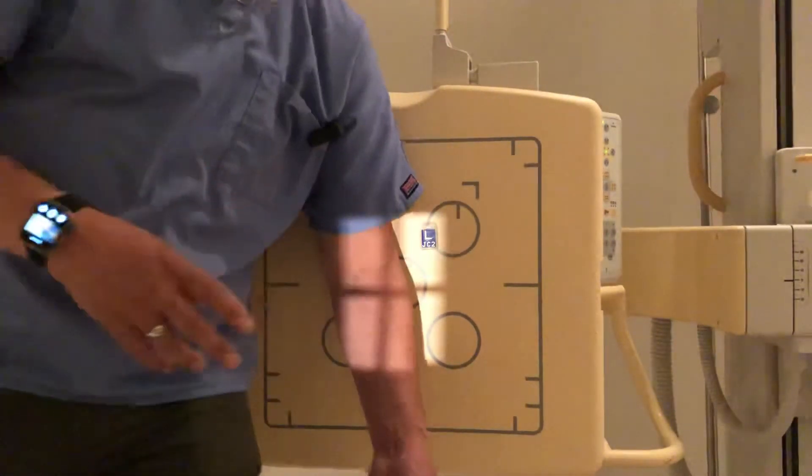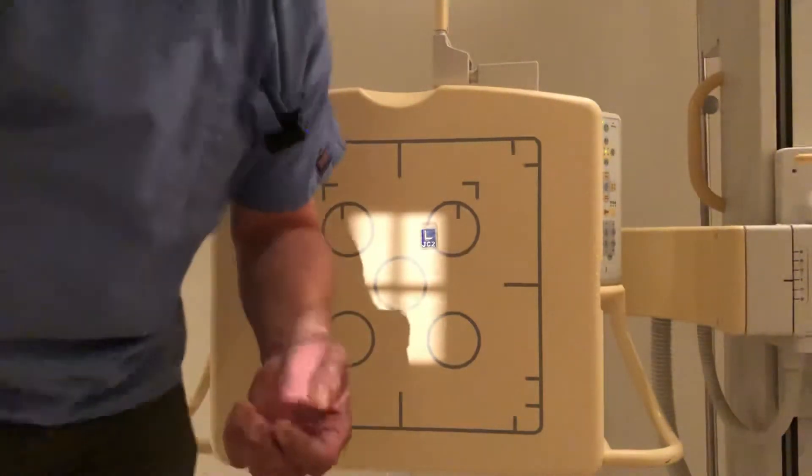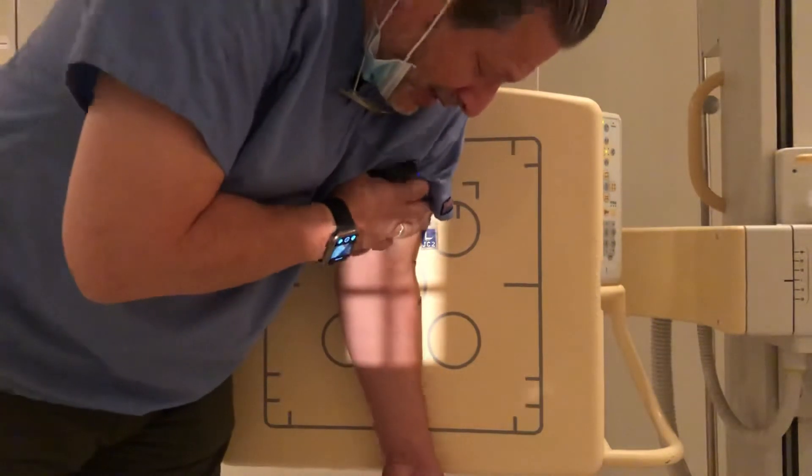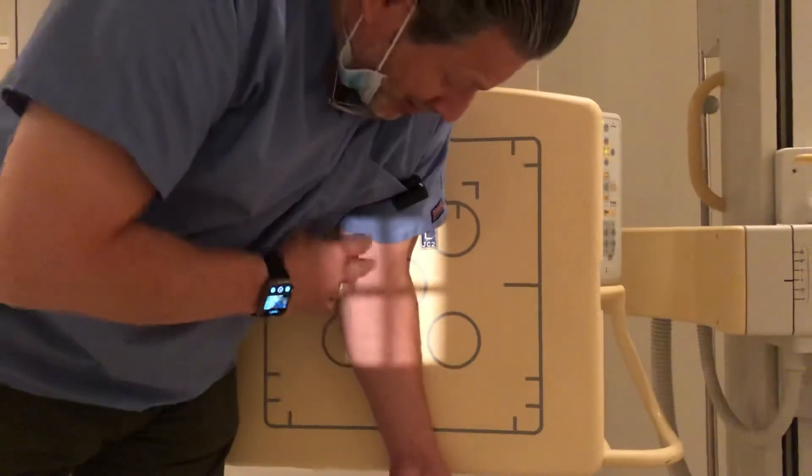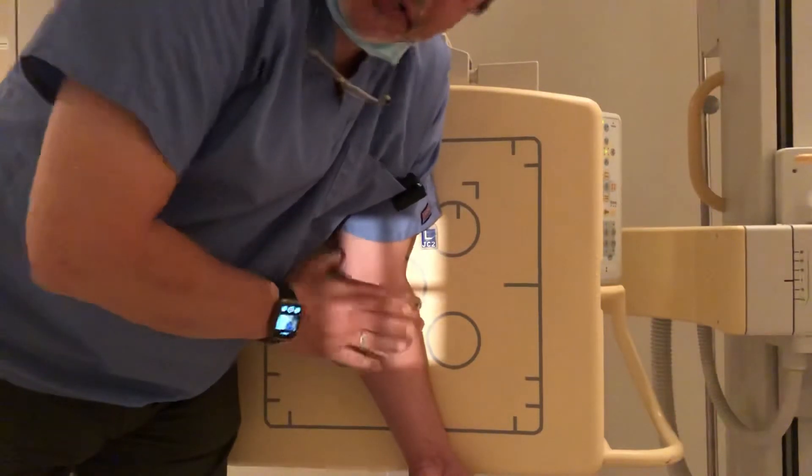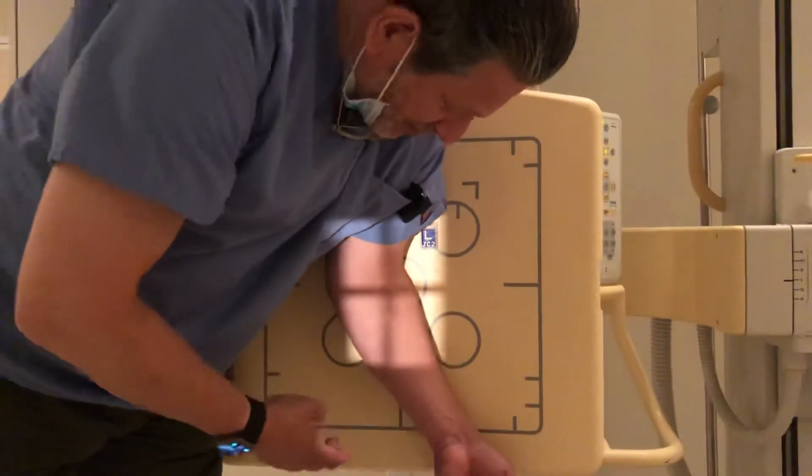Once you've done those two views and the patient's still like this, then you want to, from this view, have them turn in a little bit to get a 45 degree angle of the radial head. So they're usually coming in about 30 degrees, you're just going to go about 15 more, get in this position.